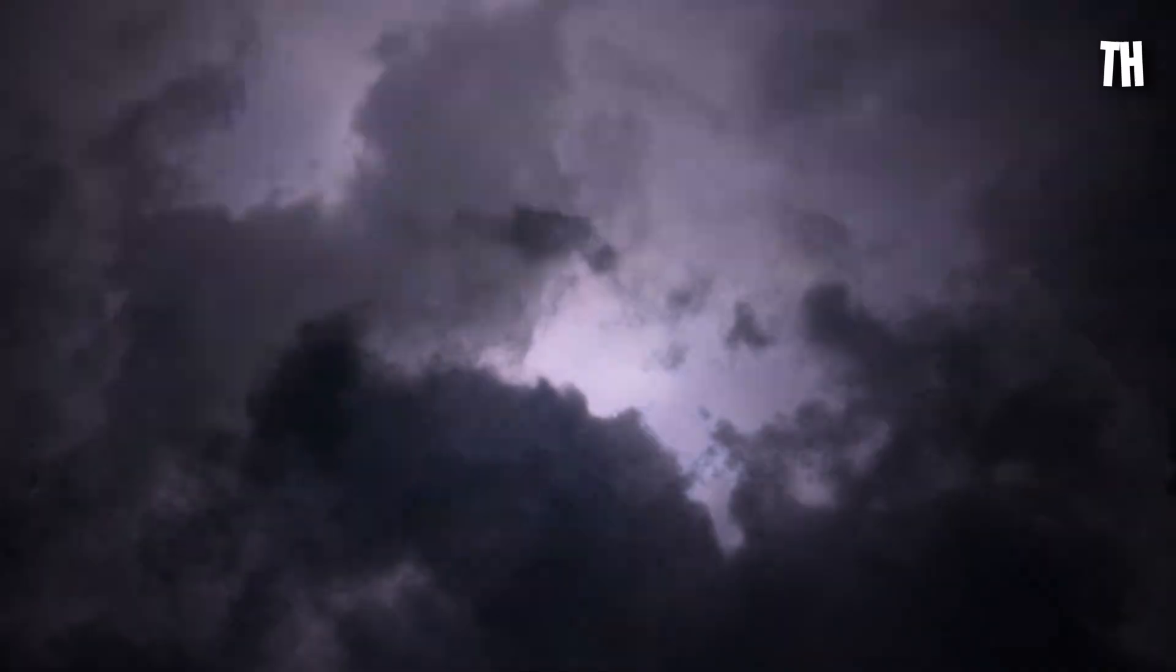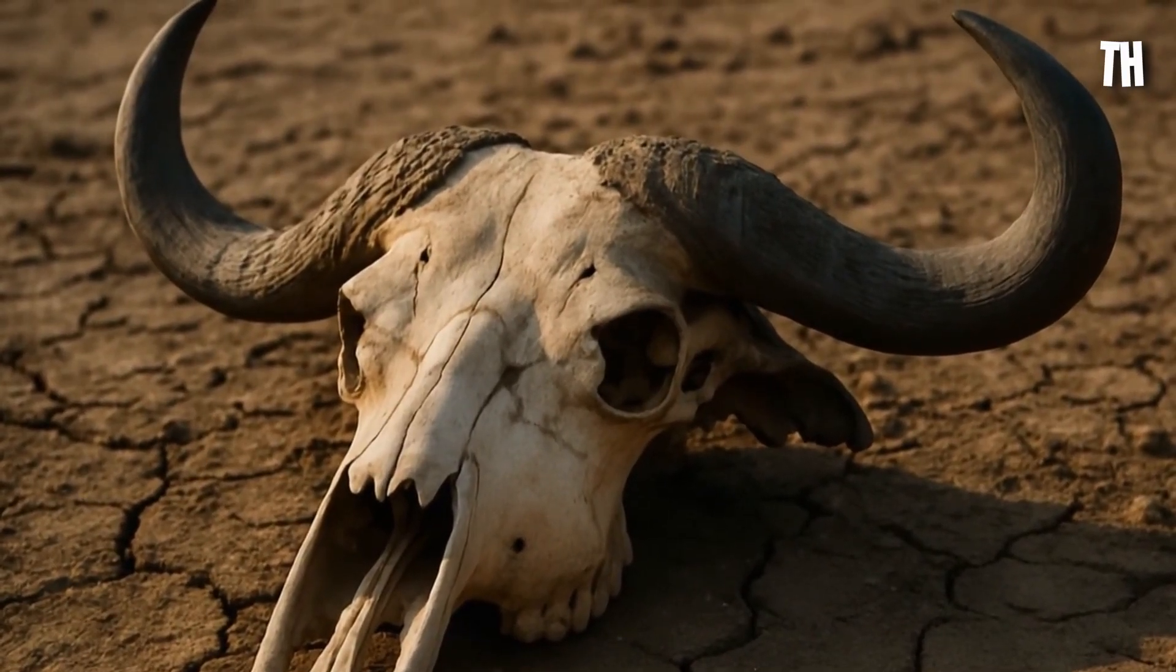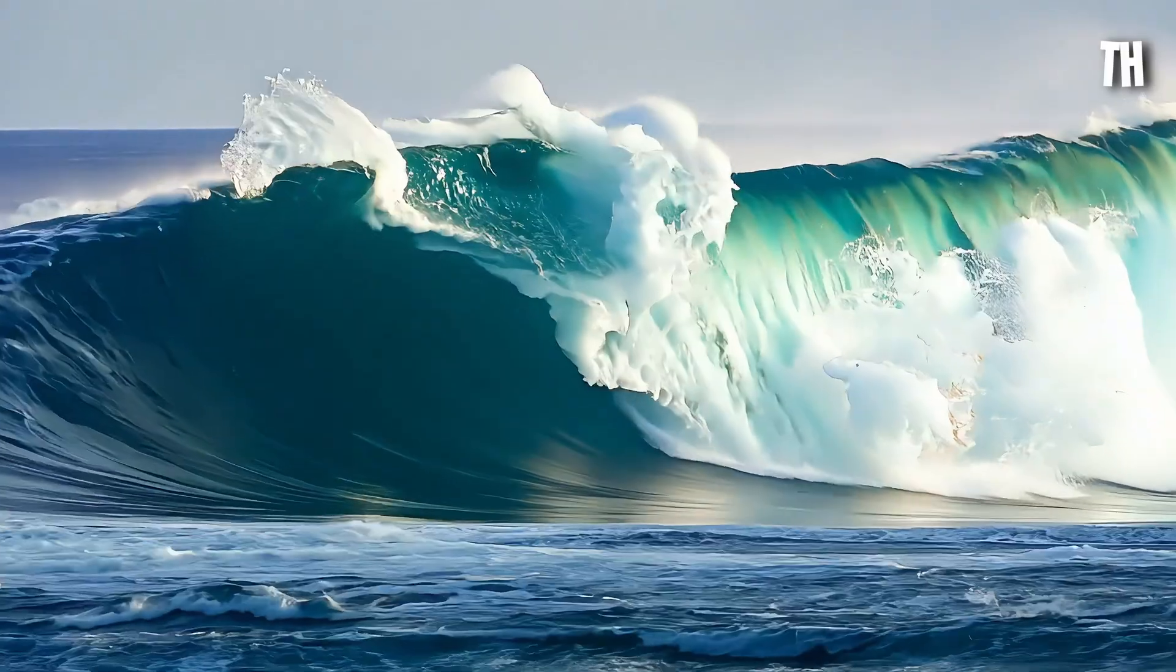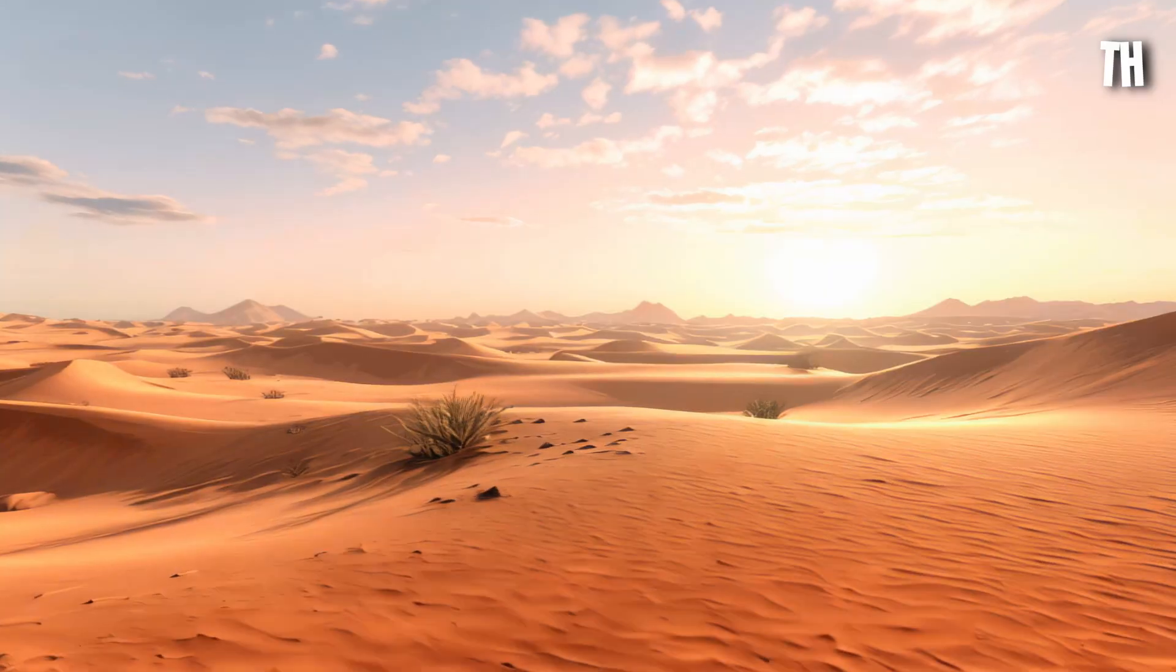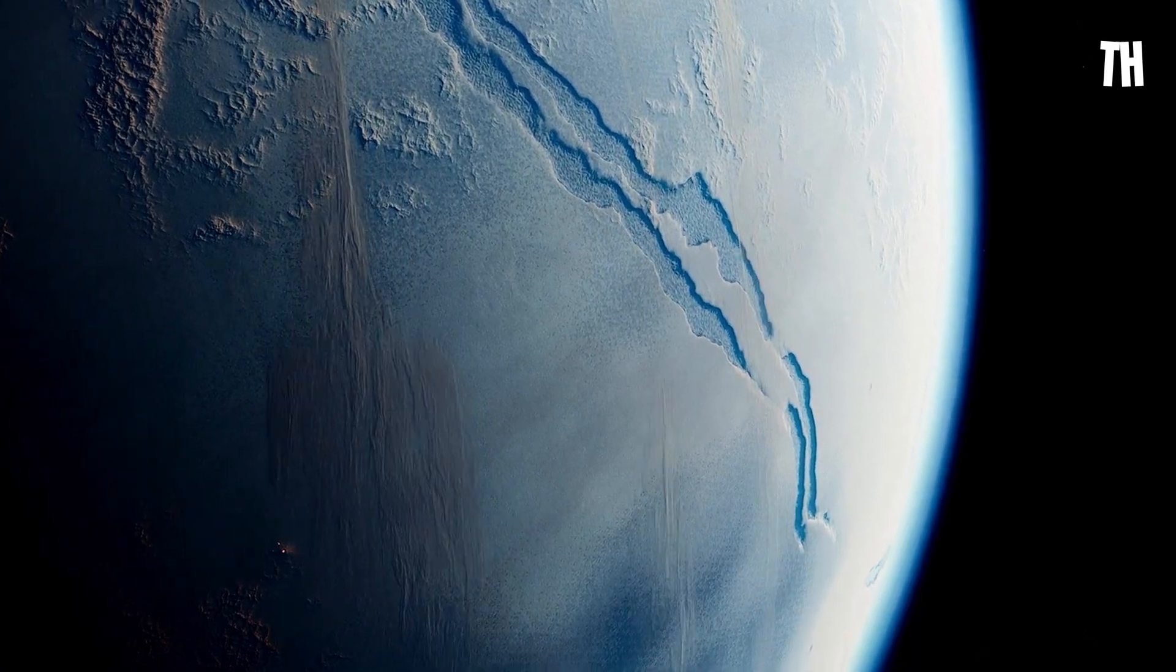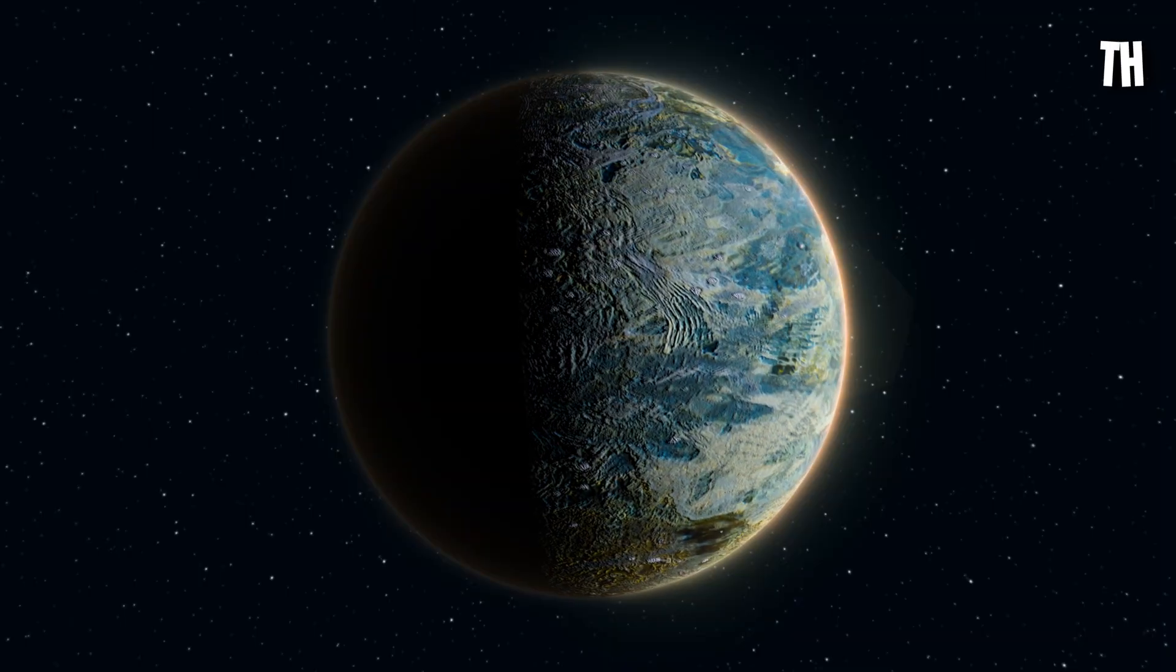Ecosystems crumble. Species vanish, not one by one, but in waves. What begins in the oceans spreads to the forests, the plains, and the skies. A global mass extinction takes hold. And Earth is no longer Earth as we knew it.